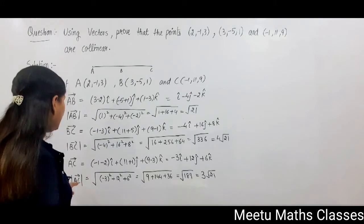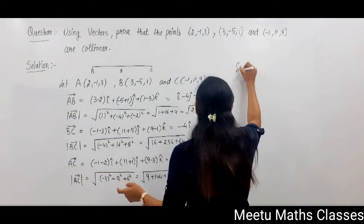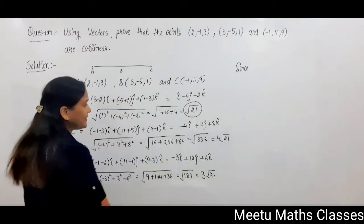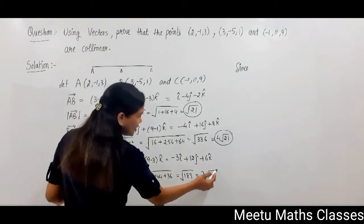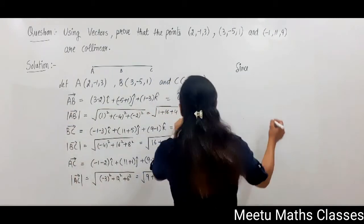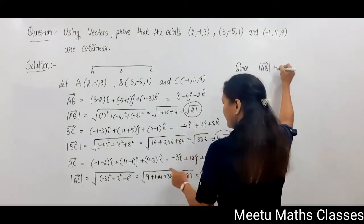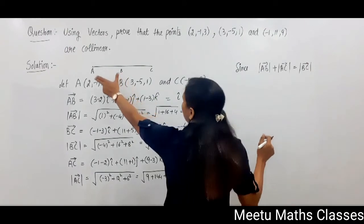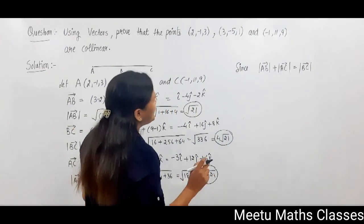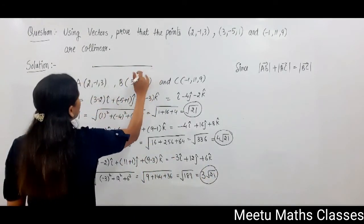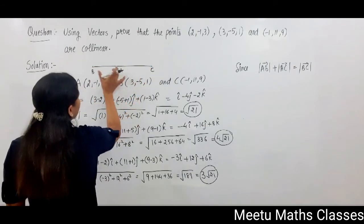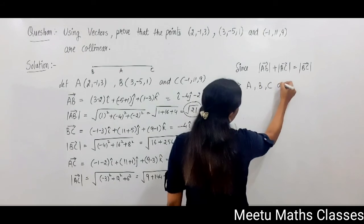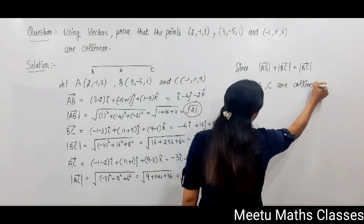Now you can observe that since the magnitude of AB is √21, BC's magnitude is 4√21, and AC's magnitude is 3√21. Since the magnitude of AB plus magnitude of AC equals magnitude of BC, this implies that the length of AB plus AC equals BC, and that implies that A, B, C are collinear.